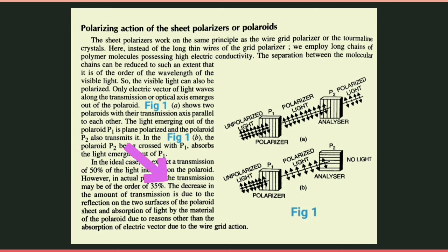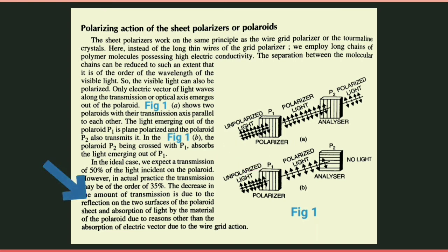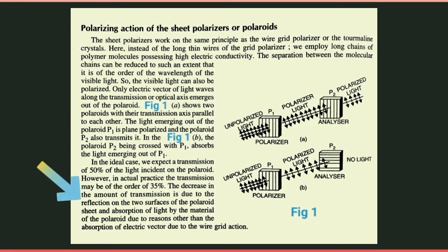However, in actual practice the transmission may be of the order of 35%. Lekin actual reality mein 35% of light transmit hoti hai. The decrease in amount of transmission is due to reflection on the two surfaces of the polarite sheet, and absorption of light by the material of the polarite due to reasons other than the wire grid action. Reflection ke wajah se aur polarite material ki absorption ke wajah se transmission mein decrease aata hai.